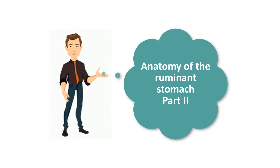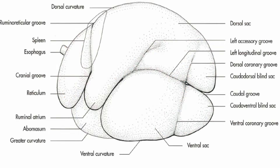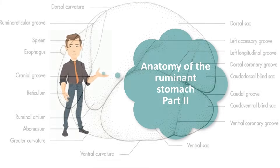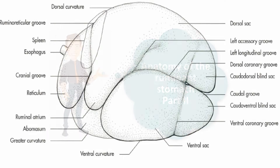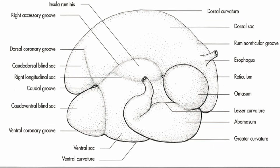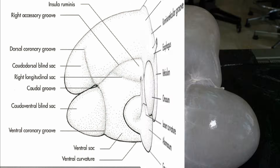Hello everyone and welcome back to another anatomy tutorial where we are going to continue talking about the ruminant stomach. Previously we talked about the external structure of the different compartments of the ruminant stomach. In this tutorial we will look at the internal surface and describe the structures which we can see internally, but first let's quickly refresh our mind about the external structures on the left view and right view of the ruminant stomach.